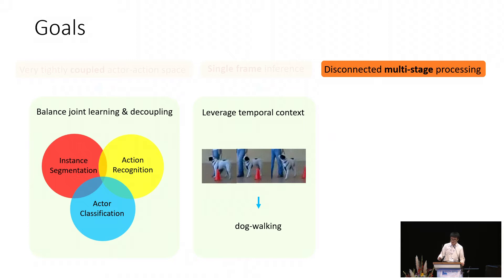Second, instead of performing single-frame inference, we want the model to leverage temporal context. For instance, if you only look at the first frame of this dog, you won't know if it's walking or not. Only if the neighboring frames are seen will one know that this dog is walking.